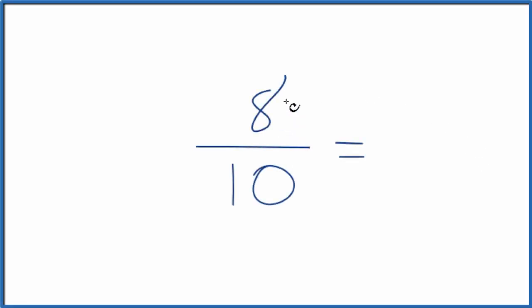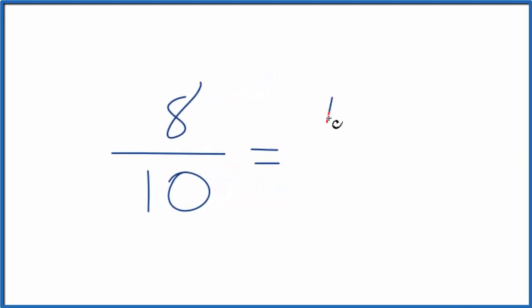Let's express the fraction 8 tenths in decimal form. First off we could simplify this: 2 goes into 8 four times and 2 goes into 10 five times. So 8 tenths and 4 fifths are equivalent fractions.